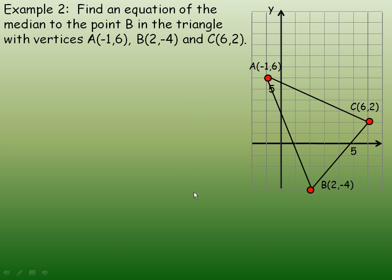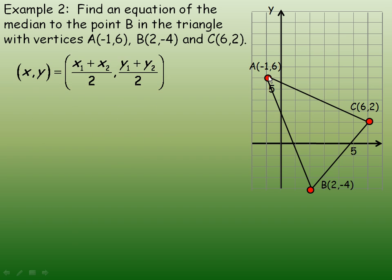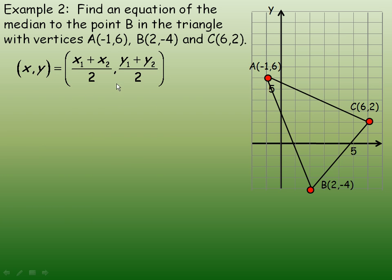Flipping over to page 2, in this example we're asked to find the equation of the median to point B. The median to any vertex in a triangle is the line segment that goes from that corner to the middle of the line segment on the opposite side. So the median to B would go through B and the midpoint on the opposite side. We need to find where that midpoint is — it's the midpoint of side AC. There's the midpoint formula, same as the last page.